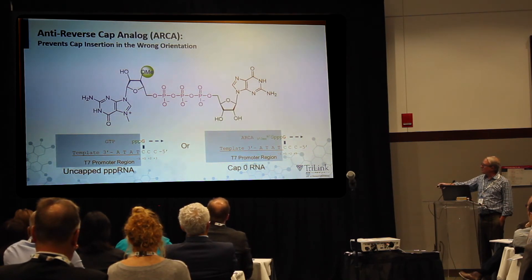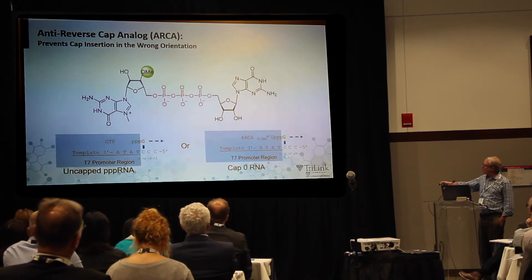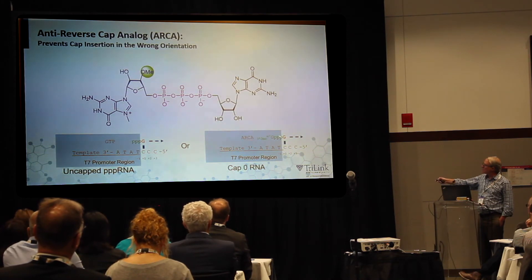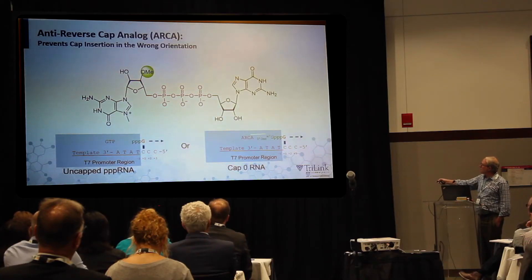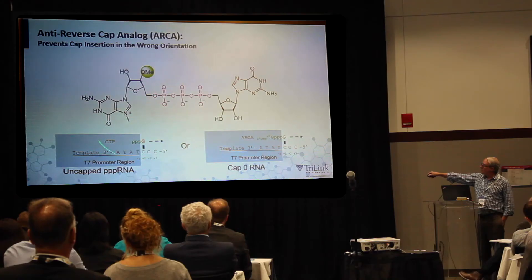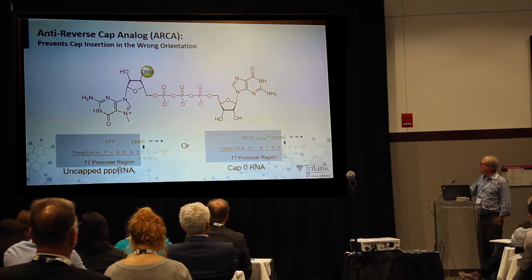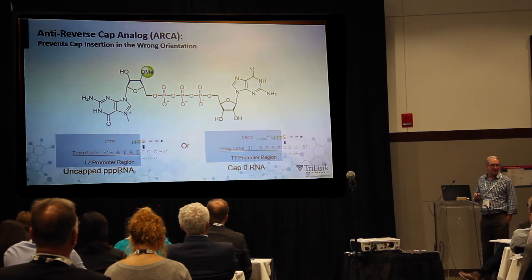Normally you would initiate with GTP, but instead you can initiate with this cap analog, where you're initiating with G at the plus one position with the cap structure hanging off the end. The polymerase seems to be okay with this. But these two reactions compete with each other, so generally you use a large excess of the cap over GTP to achieve capping — because when you initiate with GTP, you get a triphosphate instead of a cap. In general, you're getting around 70% to 80% capping when using a four- or five-fold excess, but this is the most expensive reagent in the reaction.